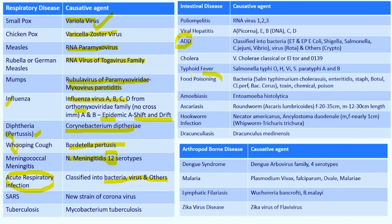Food poisoning is also classified similarly. SARS is caused by a new strain of coronavirus. Tuberculosis is caused by Mycobacterium tuberculosis. Poliomyelitis is an RNA virus with three types — one, two, three. Type 1 stands for O — responsible for outbreaks; type 2 stands for P — the potent strain; type 3 stands for V — associated with vaccine-associated polio.